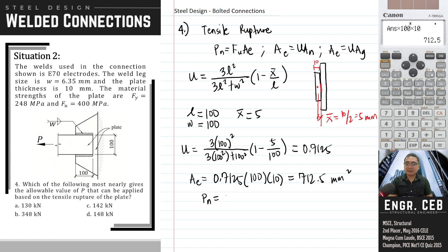So that is 400 times 712.5. So the nominal strength is 285,000 Newtons. In kilonewtons, this is 285.